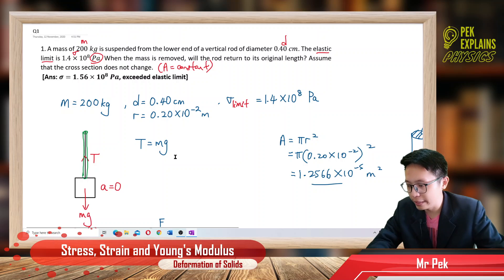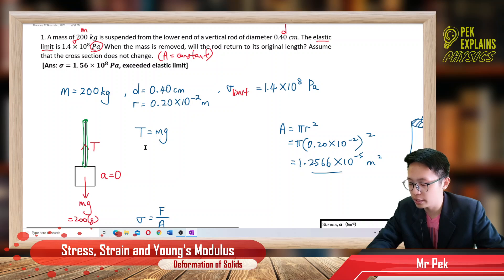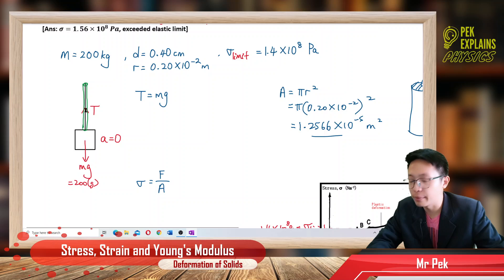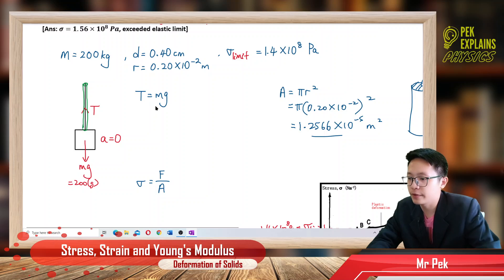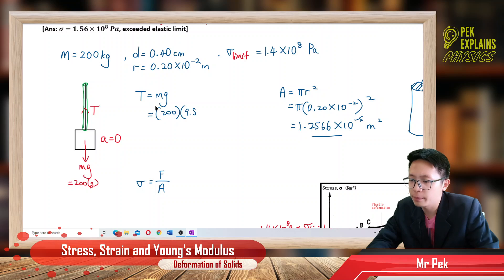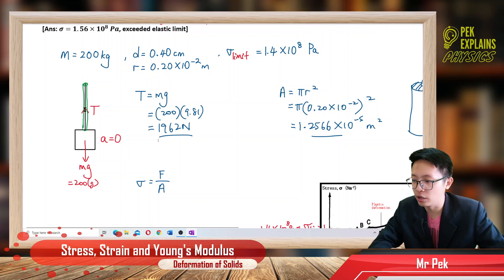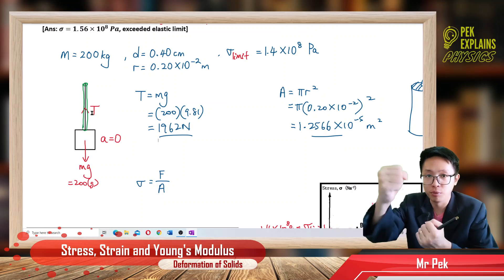Now we need to find the tension in the rod. Because the system is in equilibrium with no acceleration, tension equals mg. That is 200 kg times 9.81, giving a tension of 1962 N. This tension is pulling on and expanding the rod.